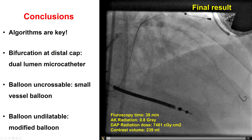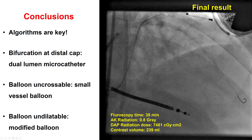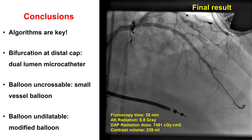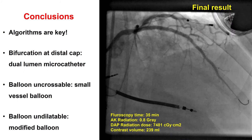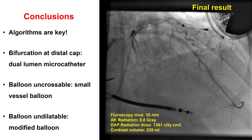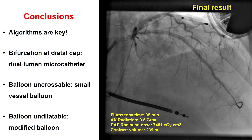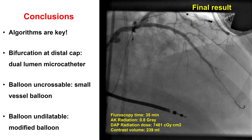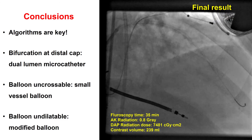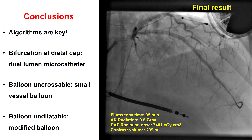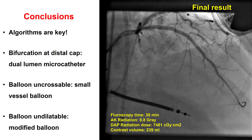In summary, this case shows that having algorithms is key for complex lesions such as this one. We had the algorithm for crossing into the side branch at the bifurcation of the distal cap — we tried to take a shortcut, but using the dual-lumen microcatheter was the best approach without having to switch to retrograde. We then had a balloon-uncrossable lesion modified with a small balloon, and finally a balloon-undilatable lesion — about half of balloon-uncrossable lesions are also balloon-undilatable — which was successfully expanded using a Chocolate modified balloon. Thank you.